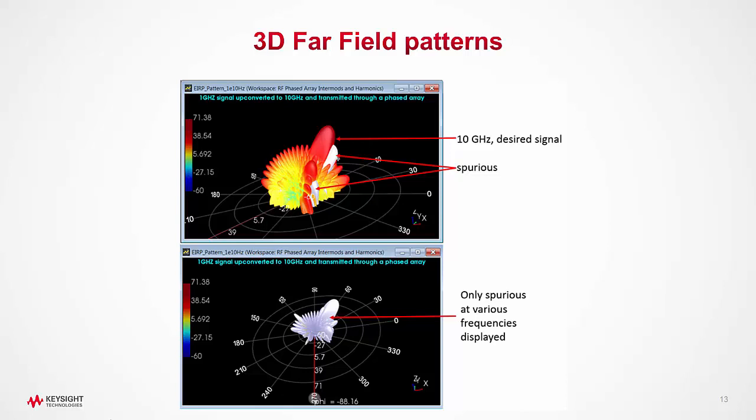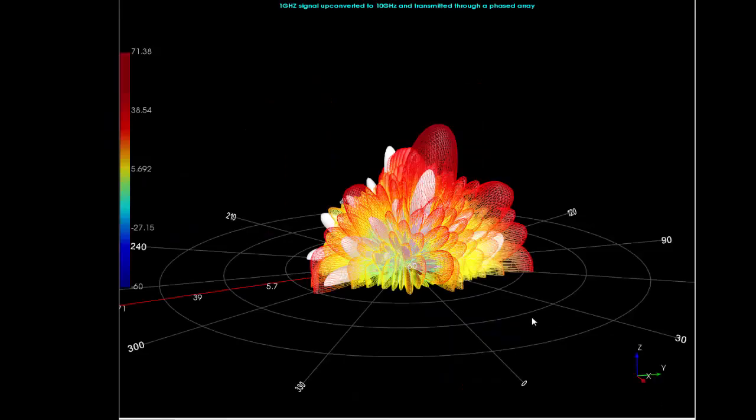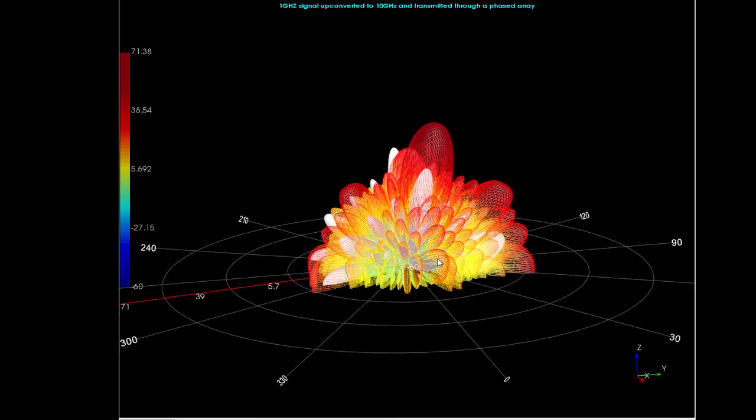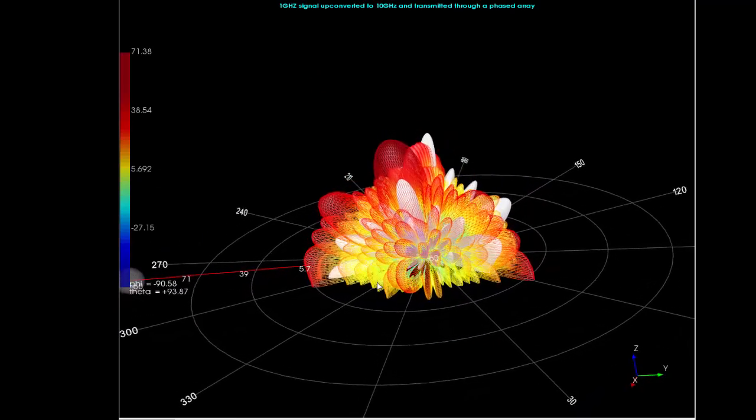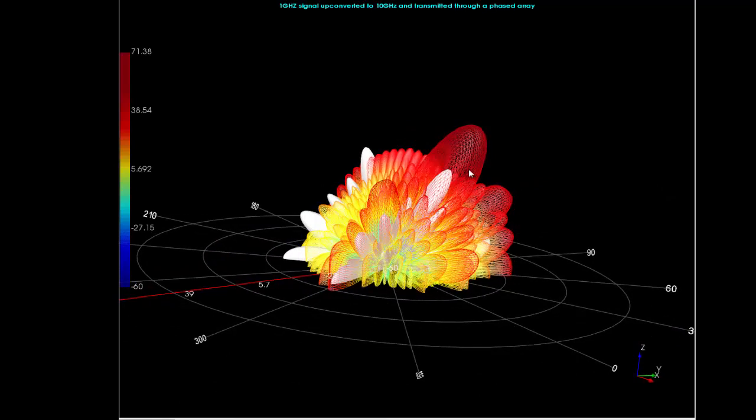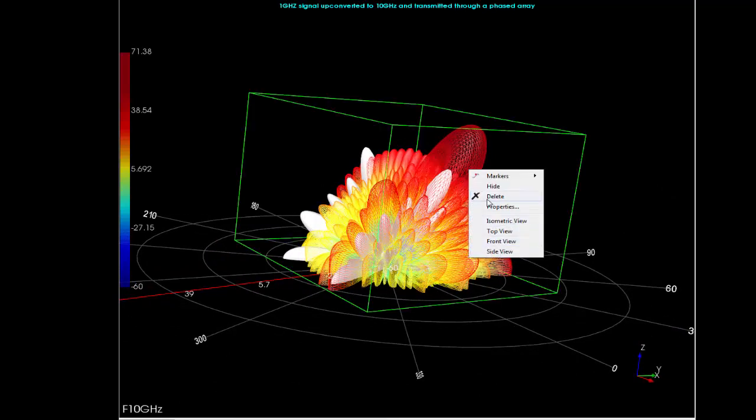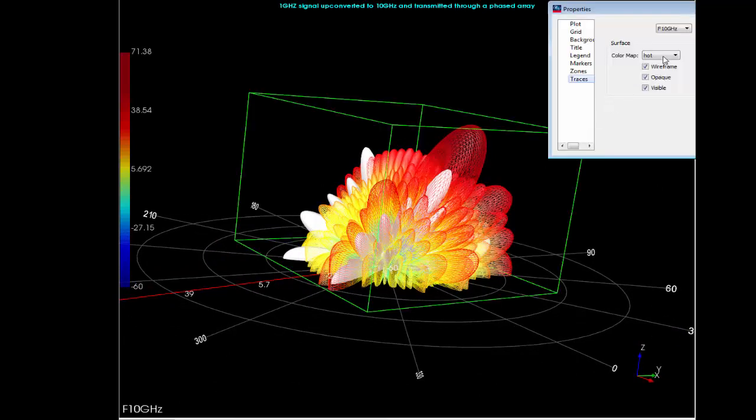So you can already see that it's a very cumbersome measurement. We presented the colorful graph as the desired signal at 10 GHz and then rest of all of them combined in a gray or white plot as spurious patterns.